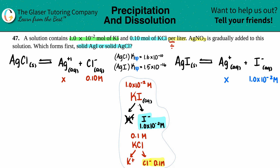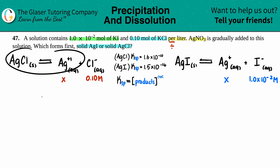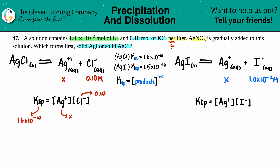Now we use the Ksp expression, which equals the product of ion concentrations raised to their coefficients. For AgCl: Ksp = [Ag⁺][Cl⁻]. For AgI: Ksp = [Ag⁺][I⁻]. Plugging in for AgCl: [Ag⁺] is x, [Cl⁻] is 0.10, and the Ksp for AgCl is 1.6×10⁻¹⁰. So: 1.6×10⁻¹⁰ = x × 0.10.